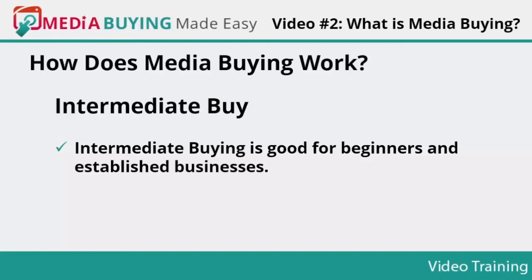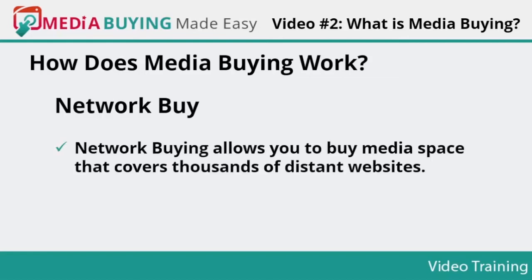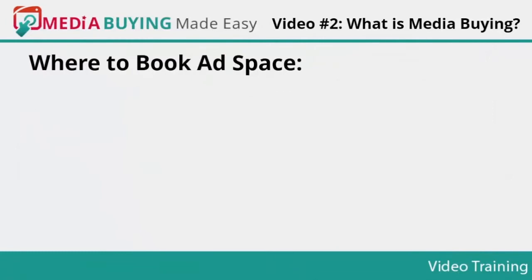Intermediate buy: intermediate buying is good for beginners and established businesses. Small networks work to bring together publishers and advertisers. Small businesses can acquire ad space on the basis of fixed monthly payments, CPM-based, and CPC. It is a 100% self-serve platform. Some intermediate agencies are ad-onion.com, buy sell ads, Exoclick, MEC Global, and many more. Network buy: network buying allows you to buy media space that covers thousands of websites. Your chances for success increase many fold, but it can also hamper your business if you do not have accurate numbers.